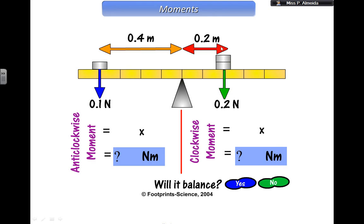I have 0.2 as a distance, 0.2 as the weight, 0.4 as a distance, 0.1 as the weight. So again, multiply clockwise and anticlockwise moment. They both give me 0.04, because 0.2 times 0.2 gives me 0.04. 0.1 times 0.4 gives me 0.04. So will it balance?